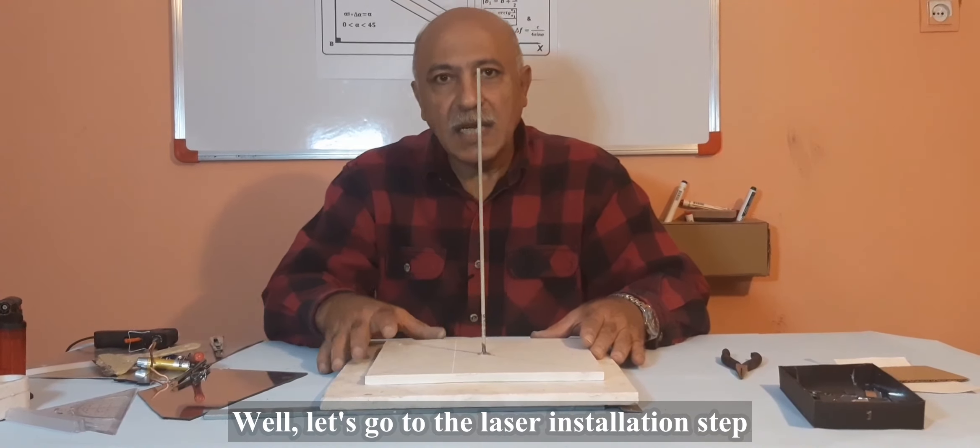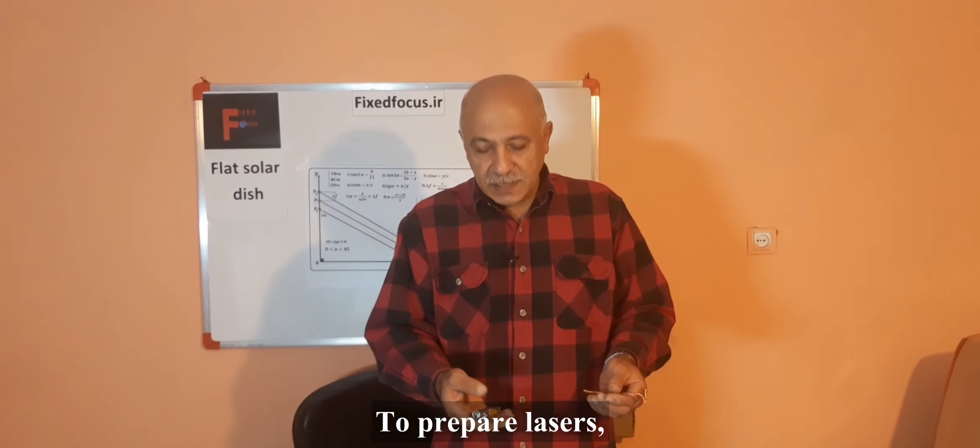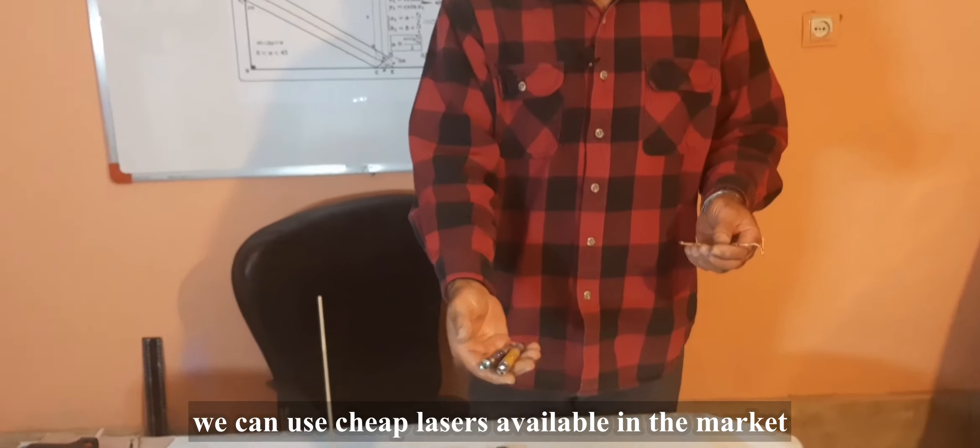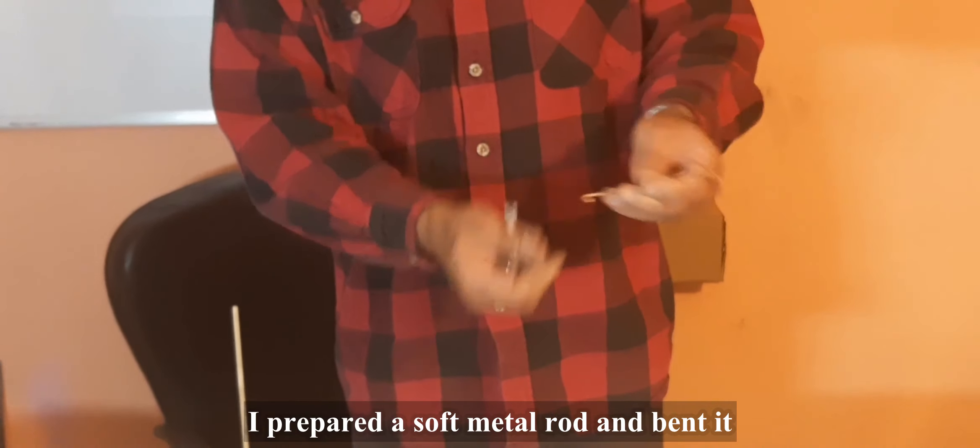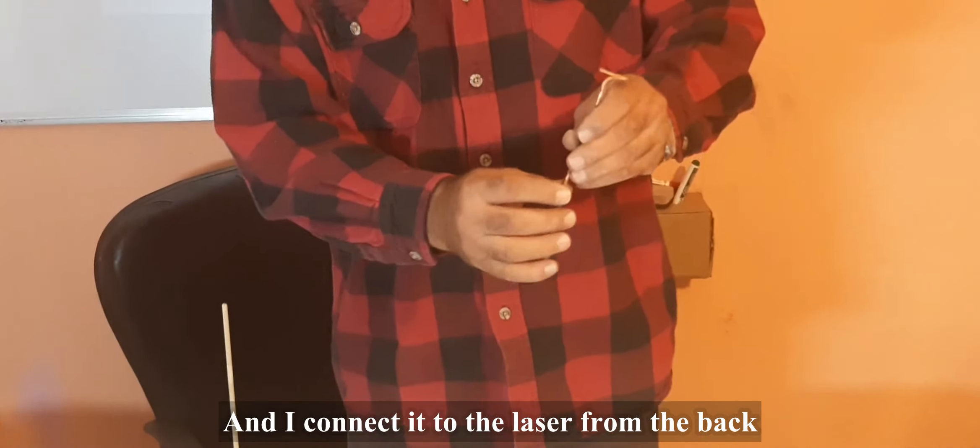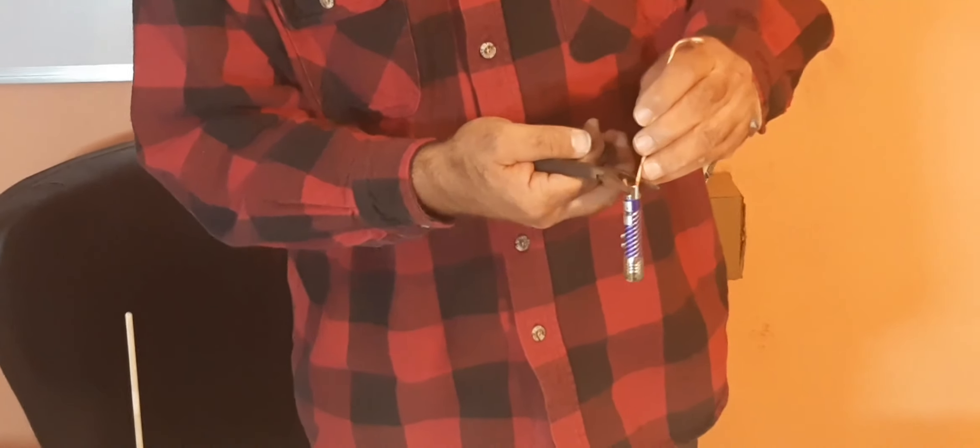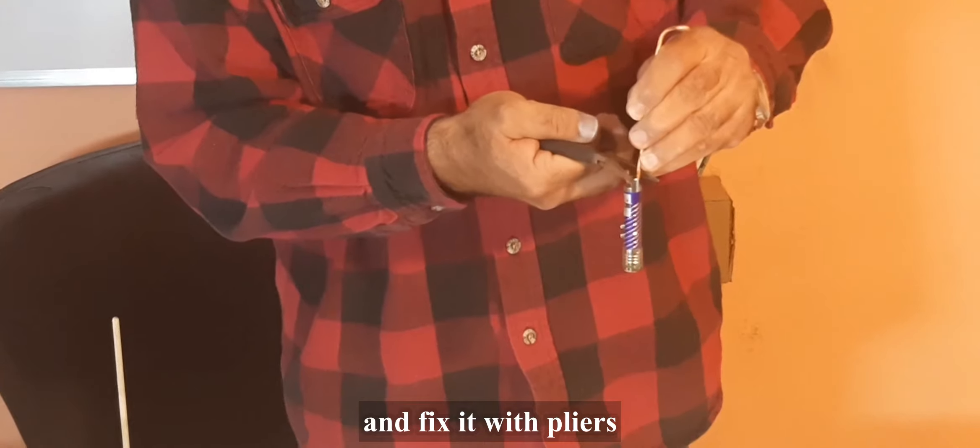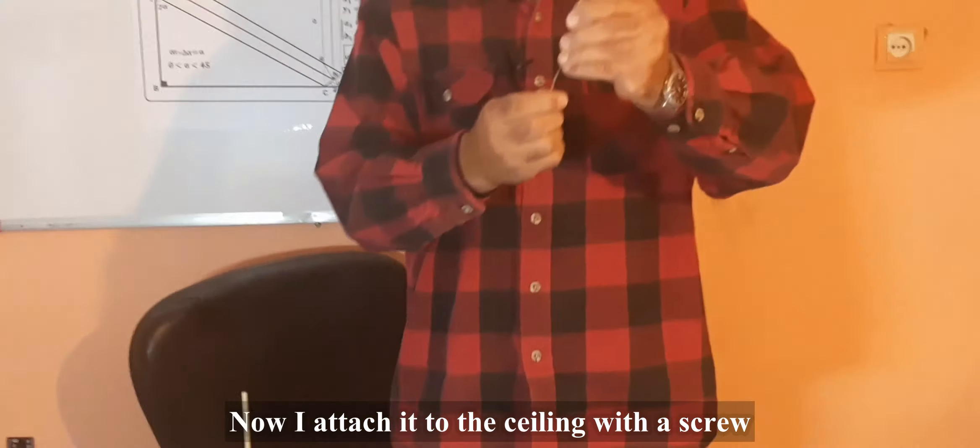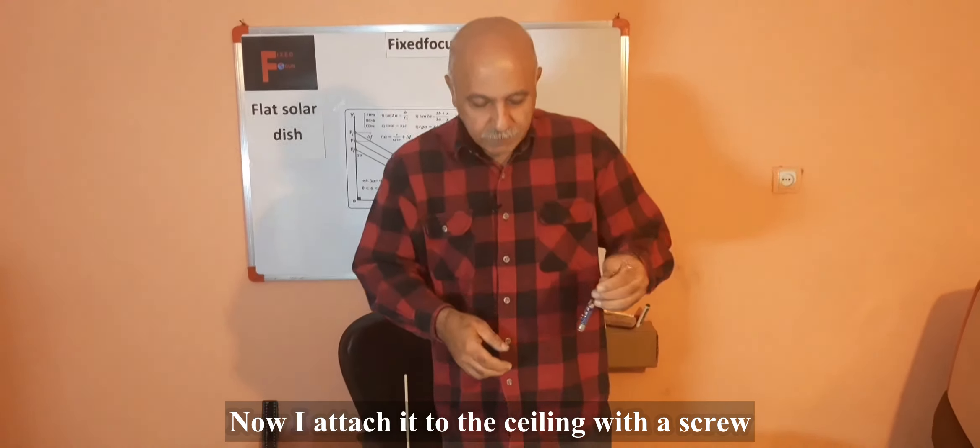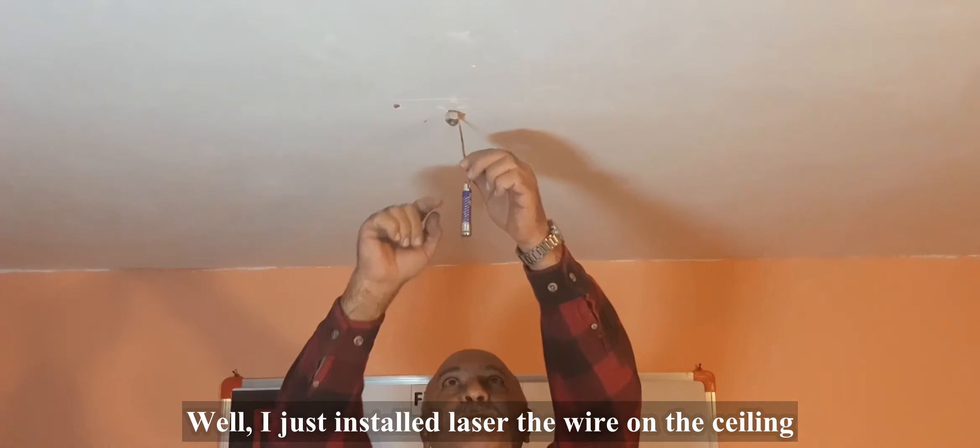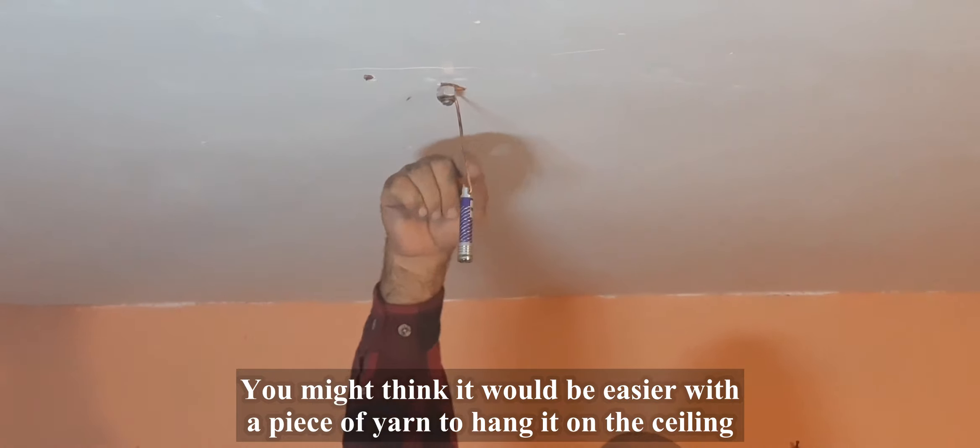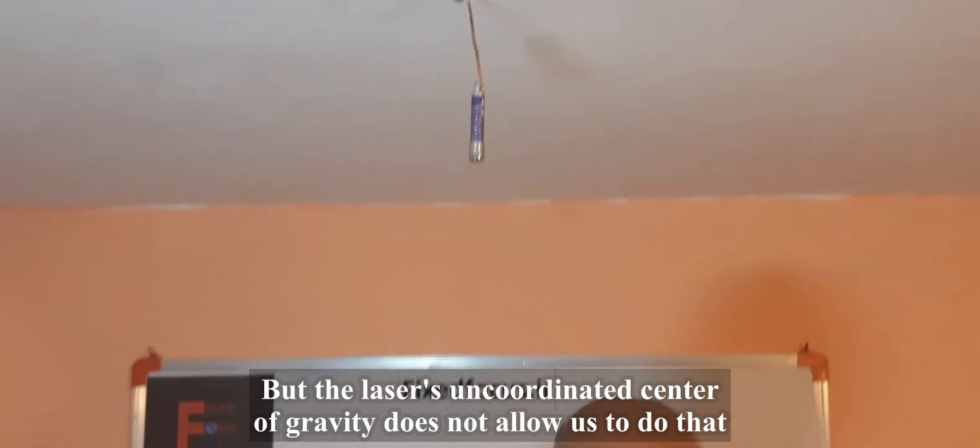Now let's go to laser installation. To prepare the laser, we can use cheap lasers available in the market. I prepare a soft metal rod and bend it, and I connect the laser from the back. I fix it with pliers. Now I attach it to the ceiling with a screw. You might think it would be easier with a piece of yarn to hang it on the ceiling, but the laser's uncoordinated center of gravity does not allow us to do this.